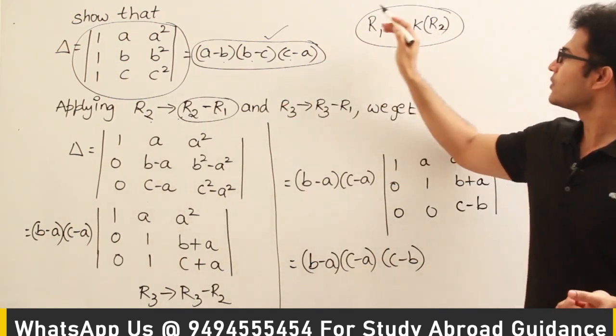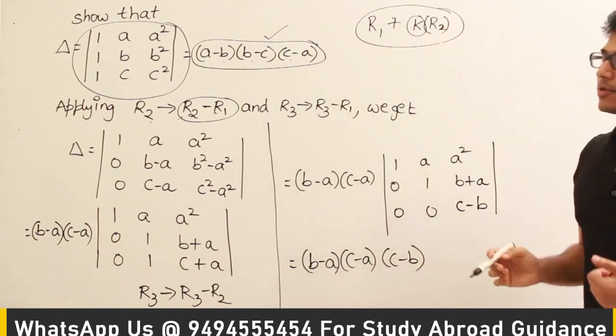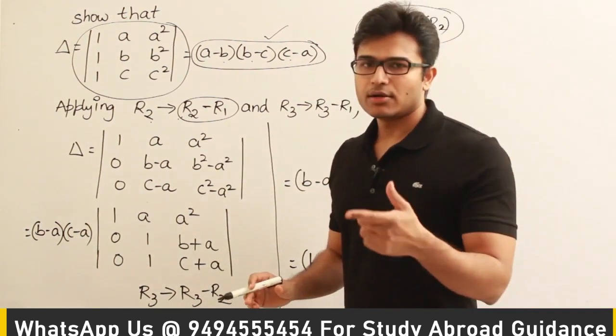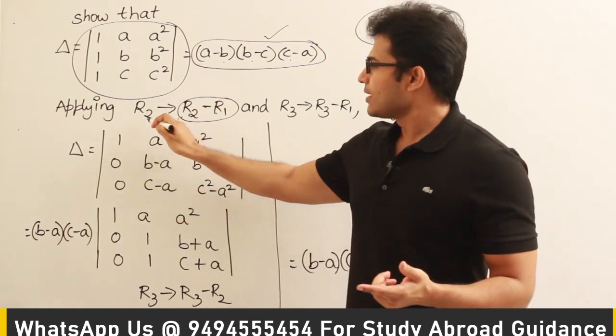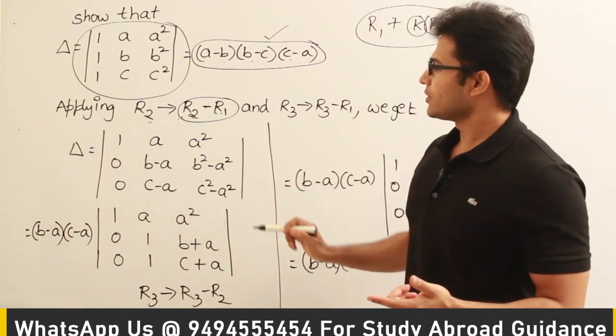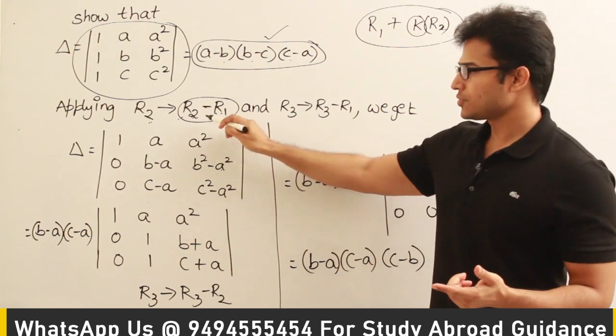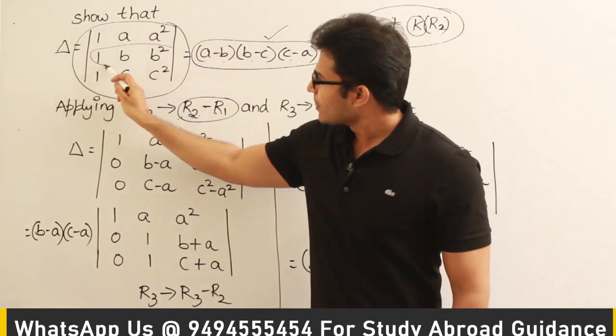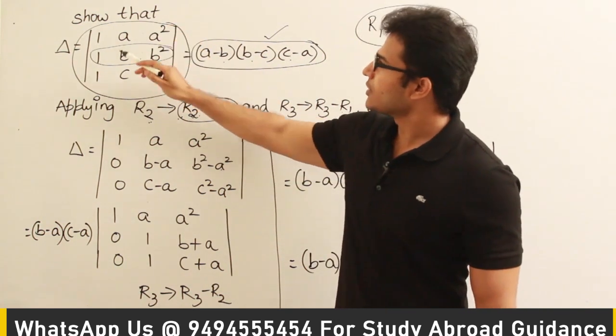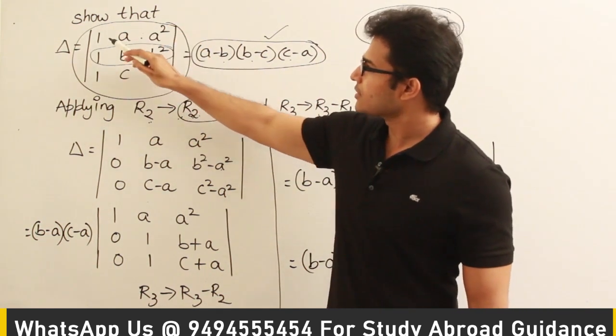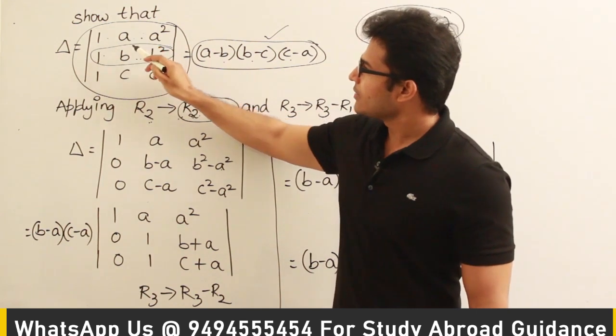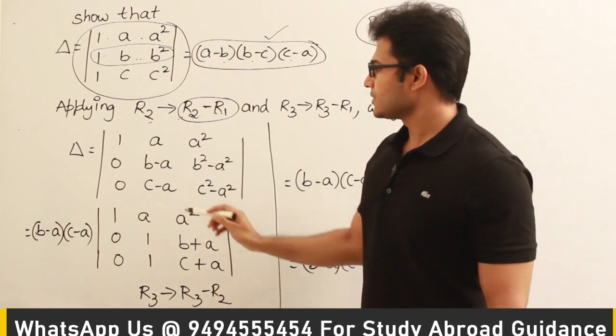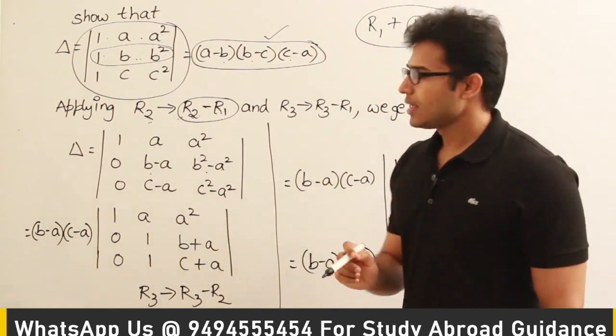R2 equal to R2 minus R1 means in place of k we are having minus 1. So here I am applying two operations: one operation is R2 equal to R2 minus R1, which means in place of row 2 I am substituting with row 2 minus row 1. See this, so this is the row 2. In place of this I will write row 2 minus row 1. So from this one I will subtract this, then what do I get? 0, and then b minus a, and then b² minus a².